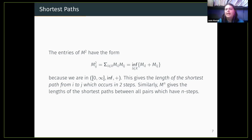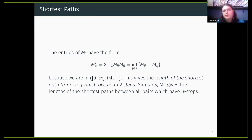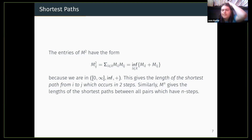So if you want to find the shortest paths in general, you want to take the infimum over all M^n, because a shortest path can occur in any number of steps. The entries of M^n represent the shortest path between all pairs of nodes containing n steps.